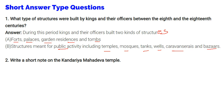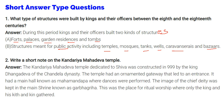Short note on Khandariya Mahadeva Temple: The Khandariya Mahadeva Temple was dedicated to Lord Shiva and was constructed in 999 CE by King Dhangadeva of the Chandela dynasty. The temple had an ornamented gateway leading to an entrance, a main hall known as Mahamandapa where dances were performed, and a main shrine known as Garbhagriha where the image of the chief deity was kept — this was the place of ritual worship where only the king and his kin gathered.